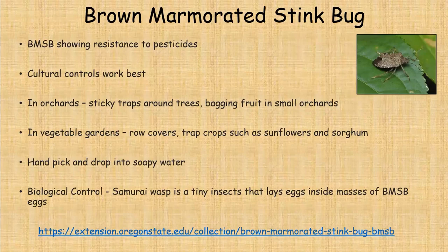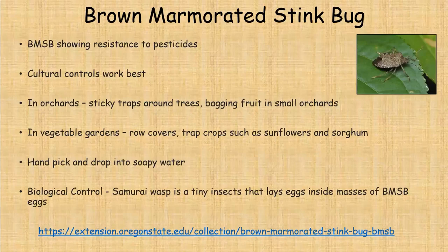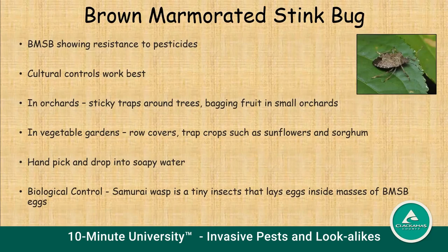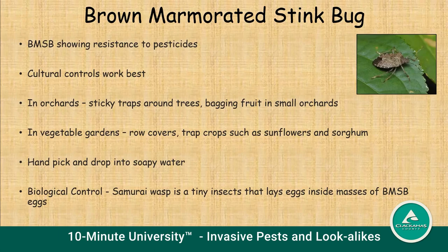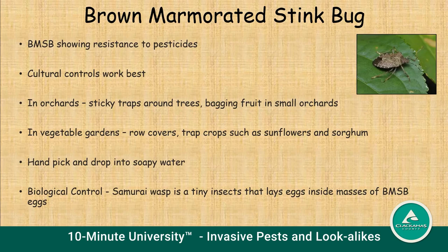Unfortunately, stink bugs are showing resistance to pesticides, so cultural control is what you'll have to work on in your home garden. If you have an orchard, you could put sticky traps around the trees, or bag the fruit if your orchard is small, to prevent the brown marmorated stink bug from damaging your apples or other fruit. In the vegetable garden, try row cover — that white material that prevents flying insects from entering. You might also try trap crops such as sunflowers or sorghum, which they prefer over many other vegetables.